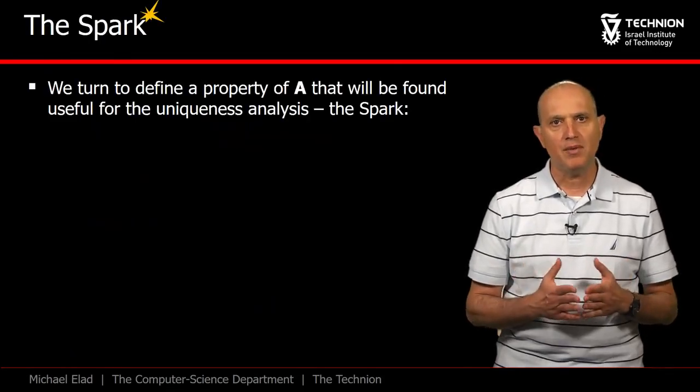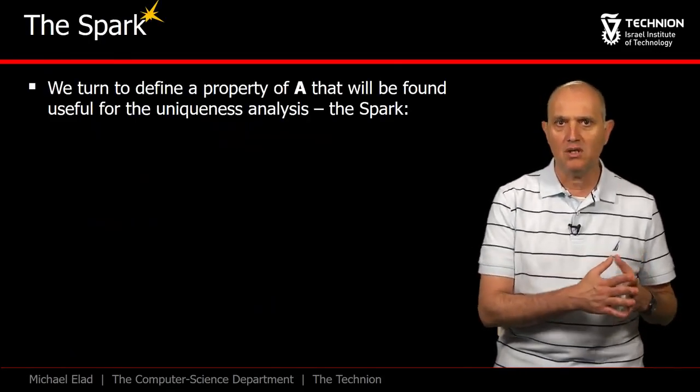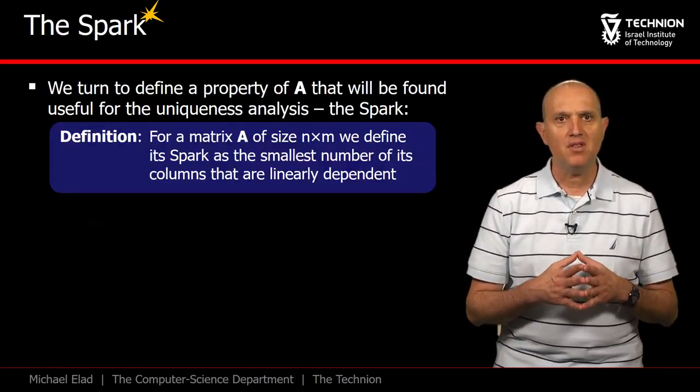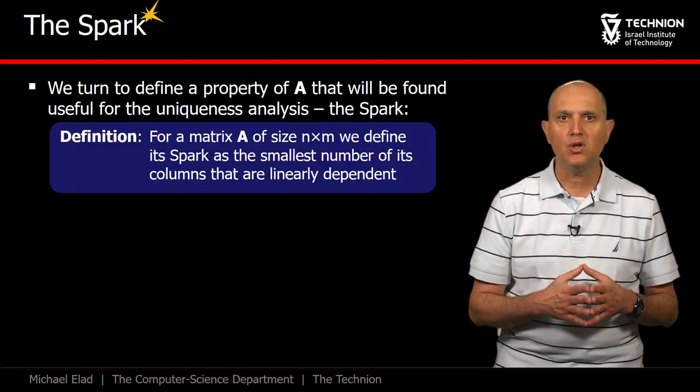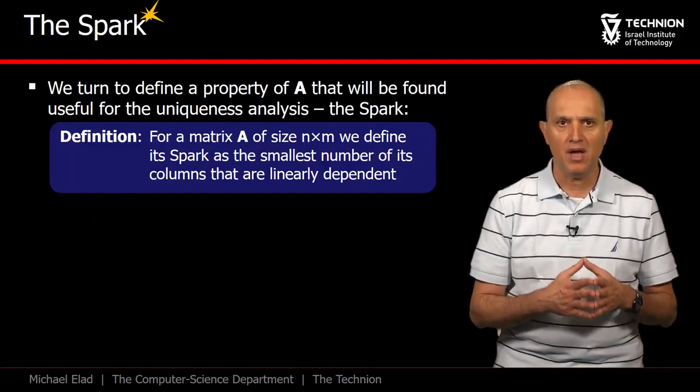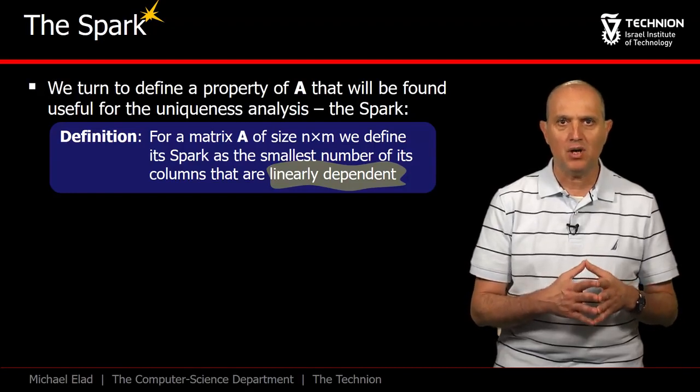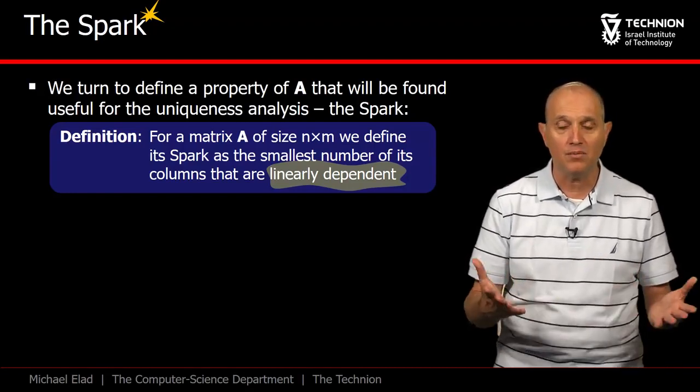Spark is a property of a matrix A, just as the mutual coherence is. And it is defined as follows. Given the matrix A, spark is the smallest number of columns from A that are linearly dependent. Note that as such, spark has an integer value, being a counter of columns.